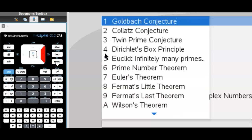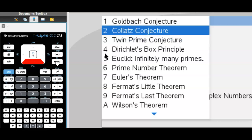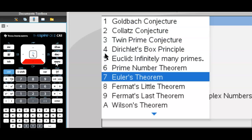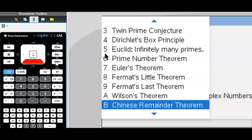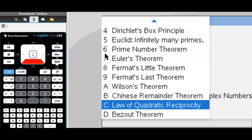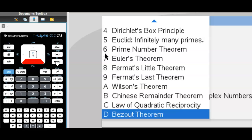We got all the theorems and conjectures covered: Goldbach, Kollatz, prime number theorem, Euler's theorem, Fermat's Little and the Last theorem, Wilson, Chinese remainder theorem, Law of Quadratic Reciprocity, and Bezou's theorem.